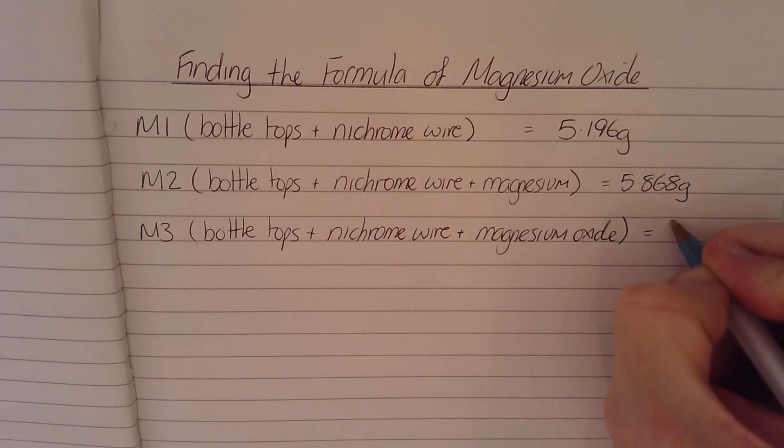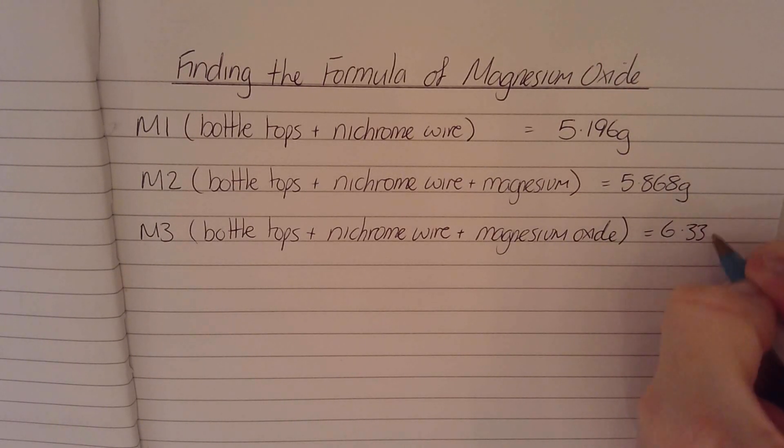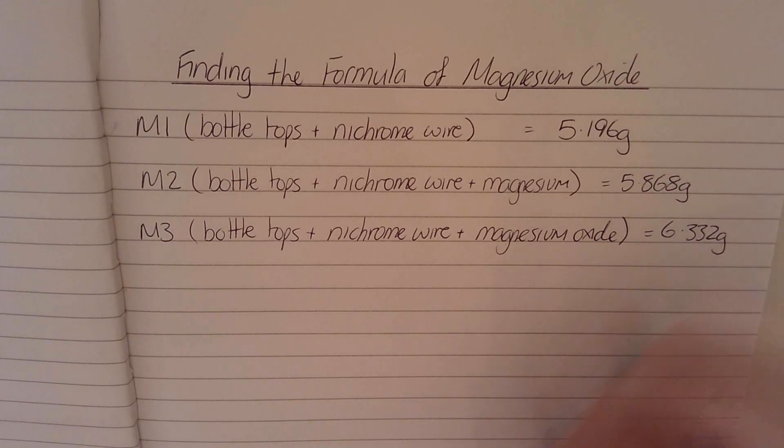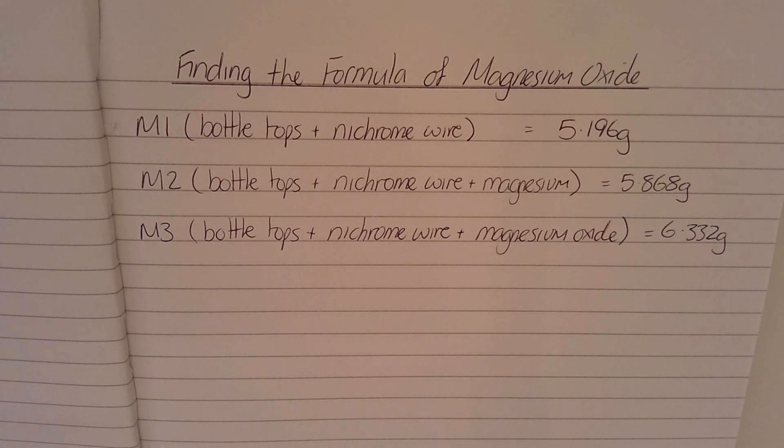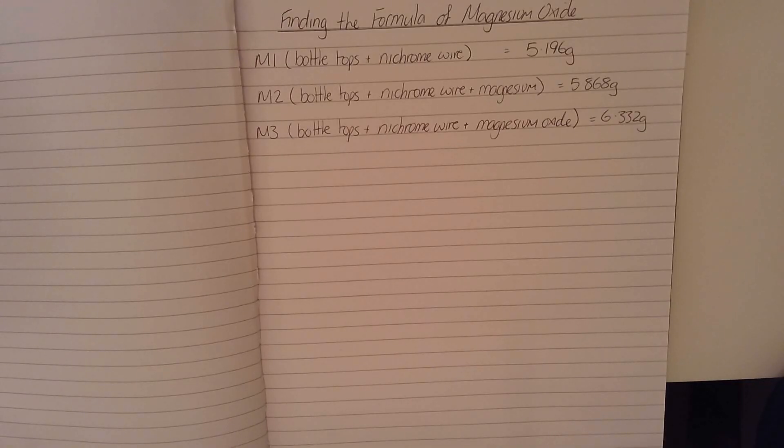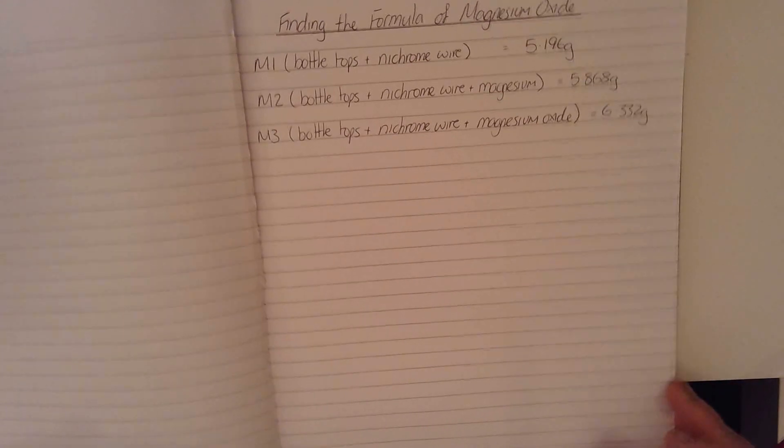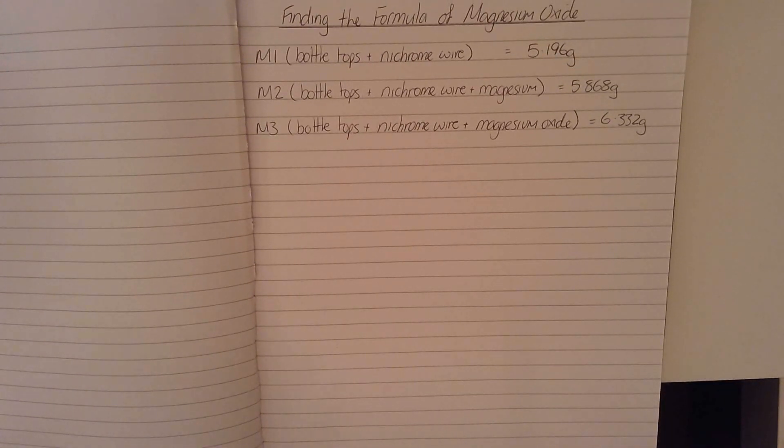So as you can see, we've had an increase in mass when we started the experiment. We had 5.868 grams of magnesium, and once it's reacted with the oxygen in the air, we have an increase in mass, and it's now 6.332 grams. To actually calculate the formula of magnesium oxide, we use these three masses that we have taken.